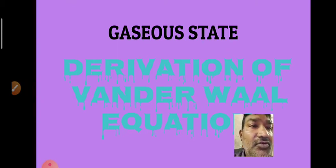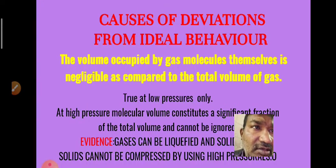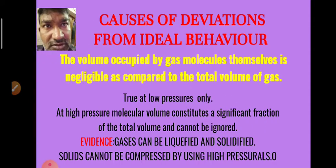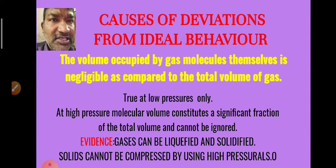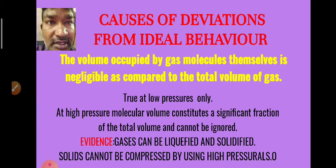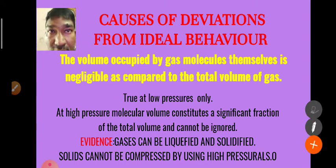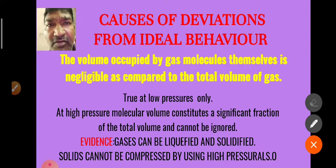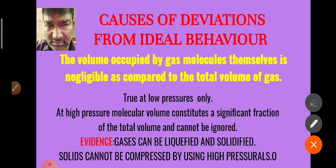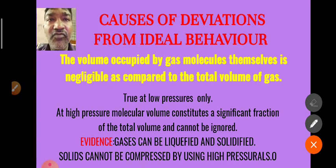First, we look at the deviations from ideal behavior. While proposing the ideal gas equation, two wrong assumptions were made in the kinetic molecular theory (KMT). The first faulty assumption is that the volume occupied by the gas molecules themselves is negligible compared to the total volume of the gas — the volume of the container in which the gas is kept.